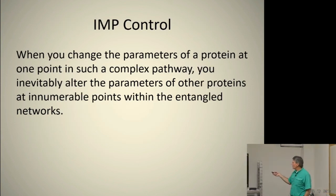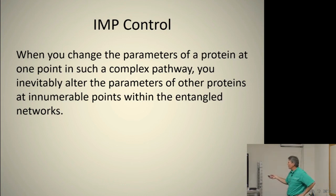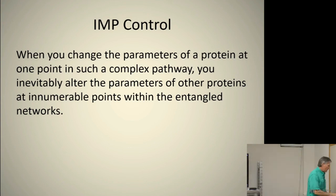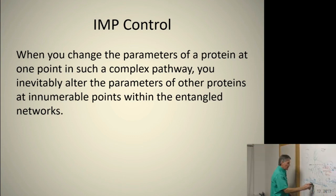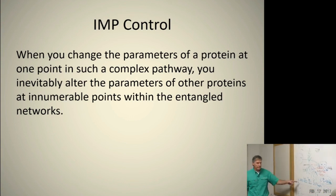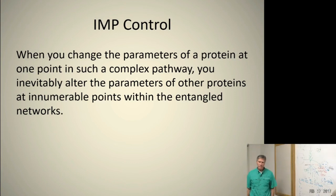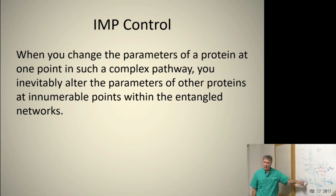When you change the parameters of a protein at one point in a complex pathway, you inevitably alter the parameters of other proteins at innumerable points along the entangled network. If we've got this pathway of taking nitrogen into a protein and I interrupt it here, break it here — what's going to happen to my protein? It's not going to be received for the plant. It's not going to happen.